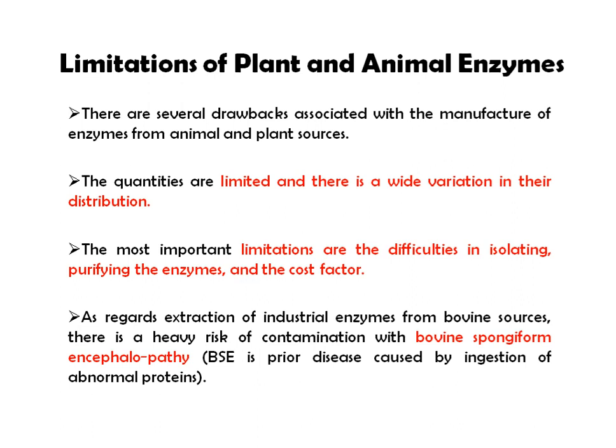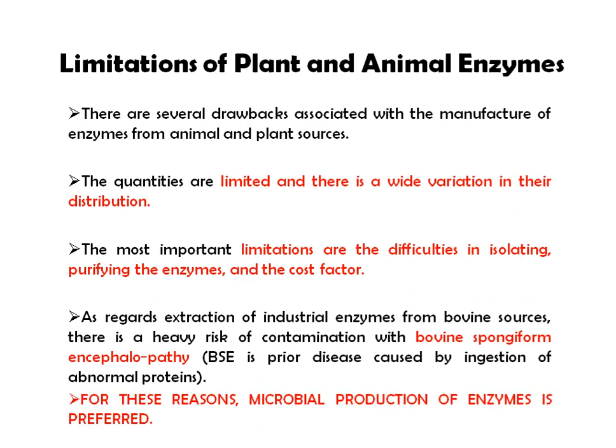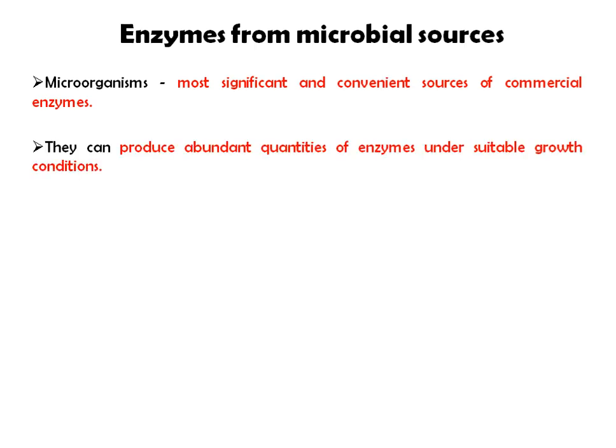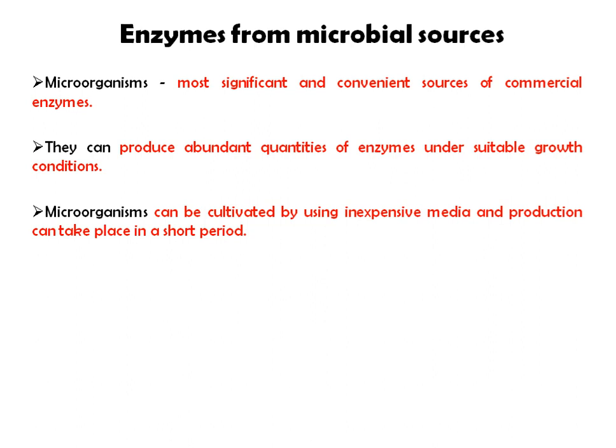These are the reasons why microorganisms are preferred. Large parts of plants or animals are required in large amounts yet yield is very low. Microbial production is preferred because microorganisms are the most significant and convenient source of commercial enzymes. They can produce abundant quantities of enzyme under suitable growth conditions.